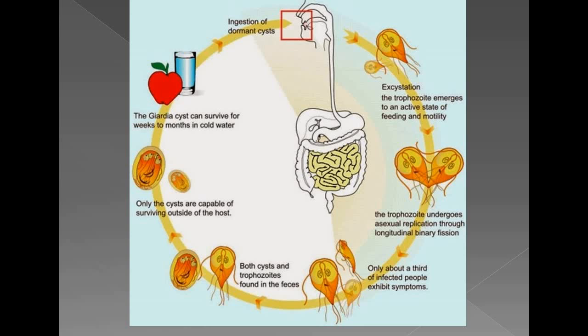The cysts are ingested, and in the stomach with acidity the cyst liberates the trophozoite. The trophozoite then reaches the small intestine and divides by longitudinal binary fission — 1 to 2 to 4 — causing diarrhea. The person has foul-smelling diarrhea due to malabsorption and passage of steatorrhea — fat in the stool.